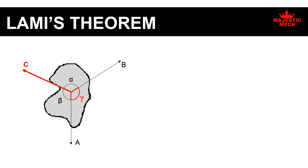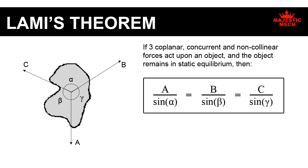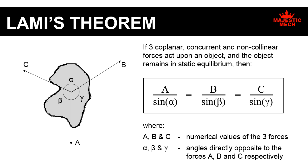Let us write this as an equation: A by sine alpha is equal to B by sine beta, that is equal to C by sine gamma. Lamy's theorem states that if three coplanar, concurrent and non-collinear forces act upon an object and the object still remains in static equilibrium, then A by sine alpha is equal to B by sine beta, that is equal to C by sine gamma, where A, B and C are the numerical values of the three forces acting on the body, and alpha, beta and gamma are the angles directly opposite to forces A, B and C respectively.